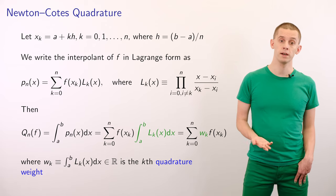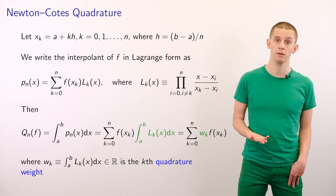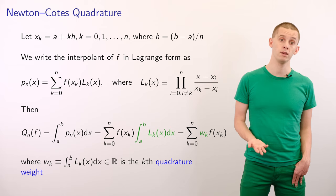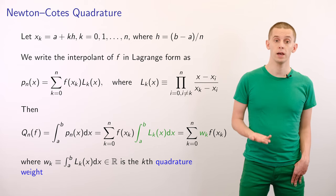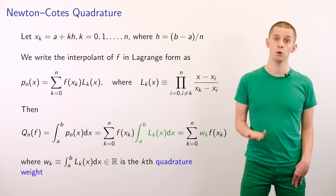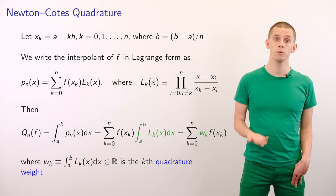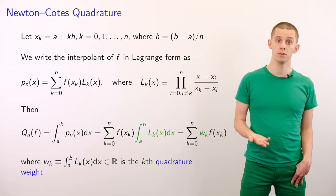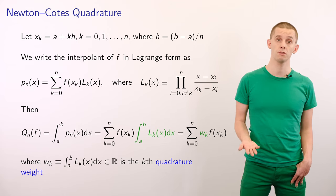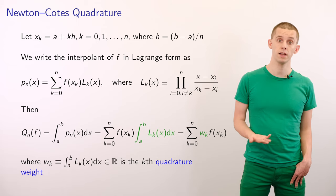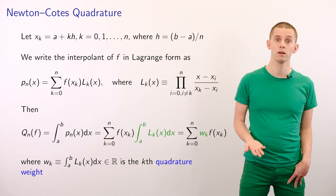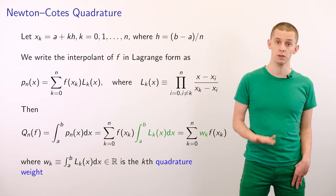We can write that as the sum from k equals 0 to n of wk times f of xk, where wk is equal to the integral from a to b of lk of x dx, and is referred to as the kth quadrature weight. Something remarkable happens here: the integrals of the Lagrange polynomials can be done ahead of time, and therefore all we need to do to evaluate our integral is to sample our function at the points xk and multiply them by the corresponding quadrature weights.